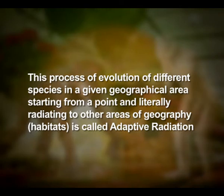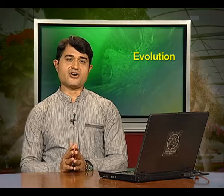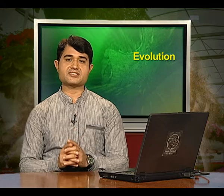This process of evolution of different species in a given geographical area, starting from a point and literally radiating to other areas of geography, that is, habitat, is called adaptive radiation. Darwin's finches represent one of the best examples of this phenomenon.